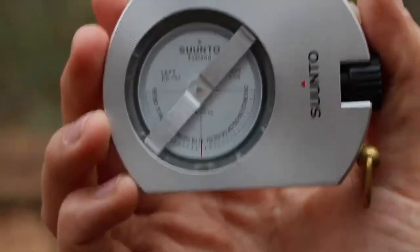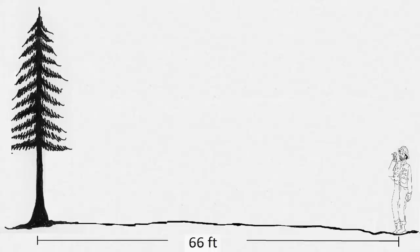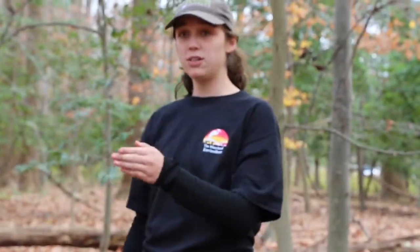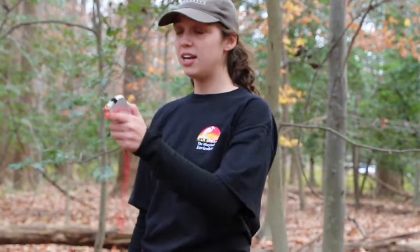The total height of a tree is measured with a clinometer. This is another instrument where you have to be 66 feet away from the tree. That 66-foot distance is one of the things we use to make sure this is an accurate and consistent number every time.